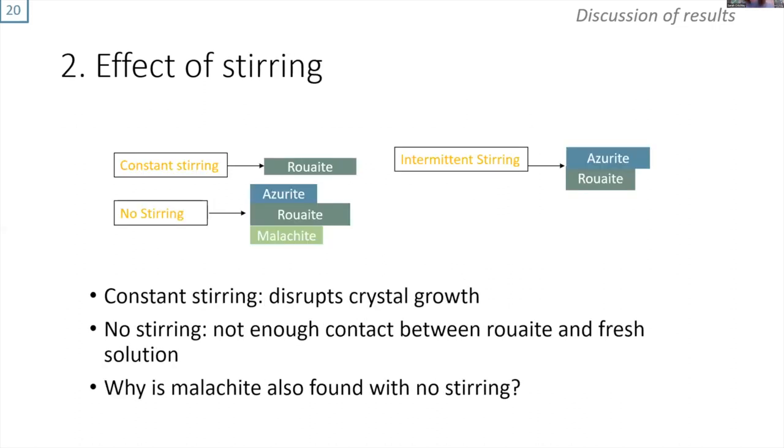The effects of stirring. It seems that constant stirring disrupts crystal growth, so it stops the azurite crystals from growing, but if you don't stir it enough, there isn't enough contact between the ruite and the fresh solution, which could be preventing azurite from forming if it's diffusion limited. But we don't really understand why malachite is also found without stirring.